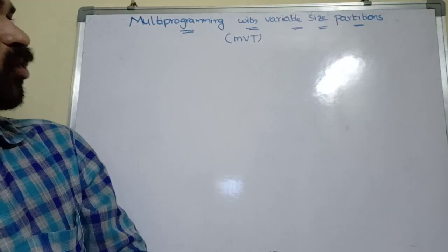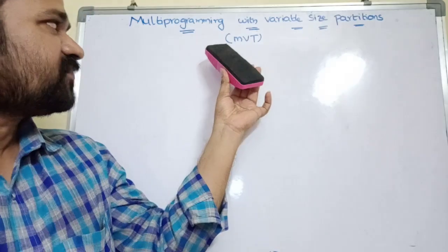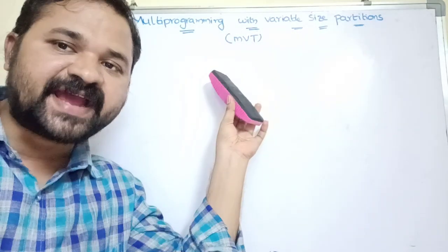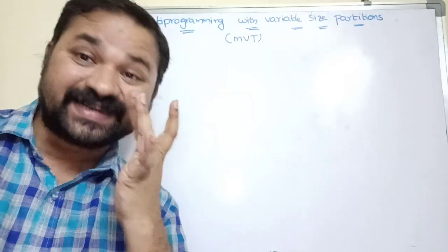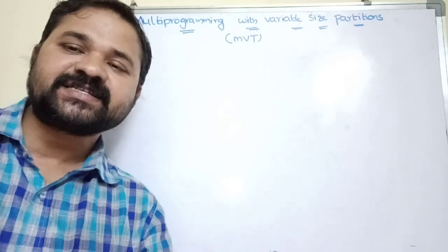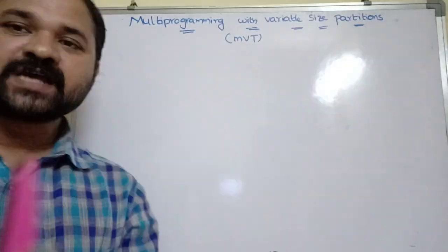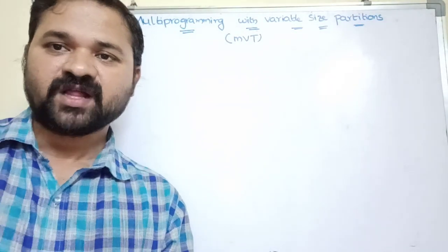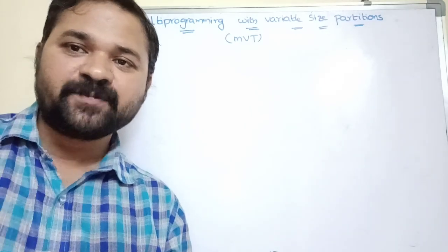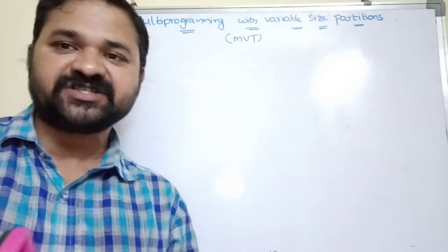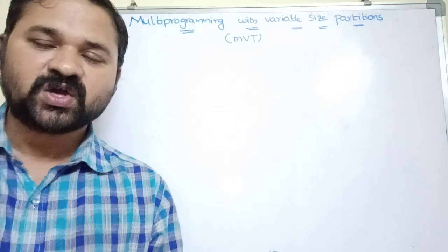Let's see about multiprogramming with variable size partitions, in short called MVT, where M stands for multiprogramming, V stands for variable, T stands for tasks. A task is nothing but a partition or a process. This is an example of contiguous memory allocation. We have two types: multiprogramming with fixed size partitions, and multiprogramming with variable size partitions.